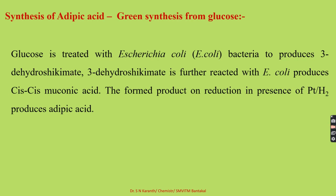Here we use glucose as a precursor and E. coli bacteria in two steps of the reaction. E. coli itself acts as a reactant component and helps with the conversion from glucose to muconic acid. Further, muconic acid is subjected to a reduction process to get adipic acid.